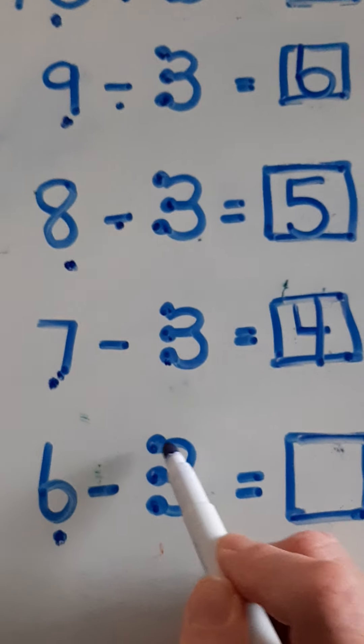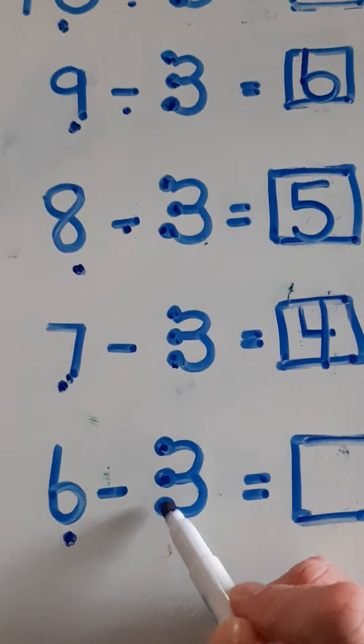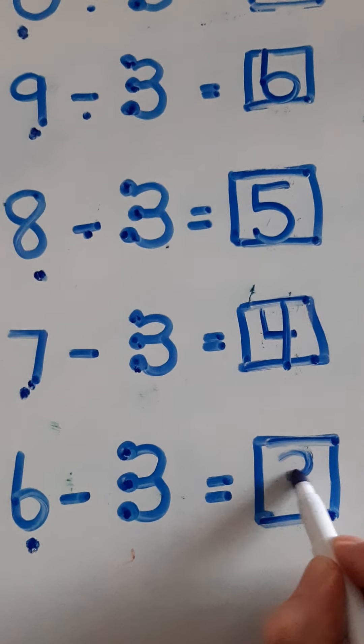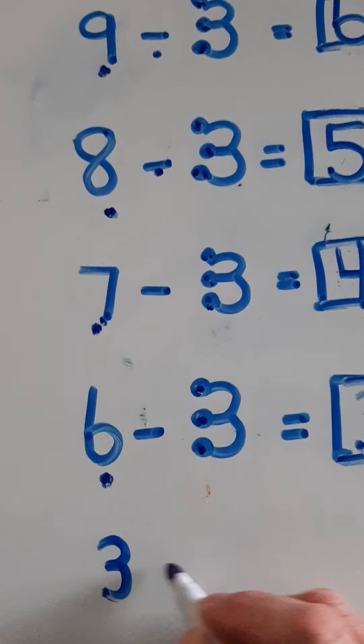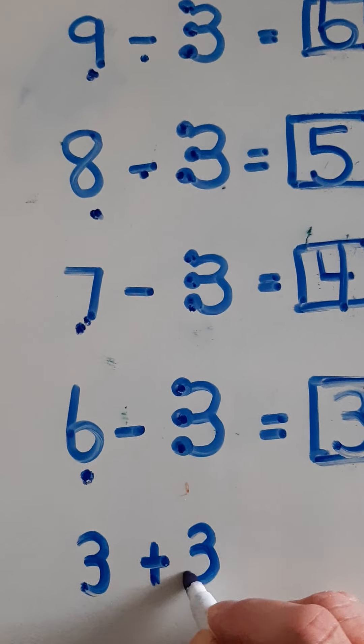Let's try 7 take away 3. Tap 7 first. Seven, then count backwards on three: 6, 5, 4. So 7 take away 3 equals 4.